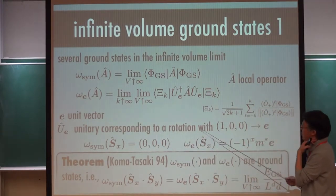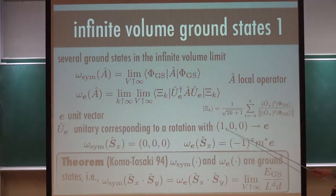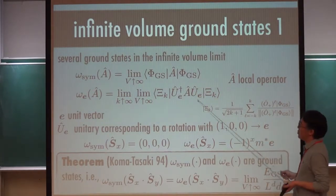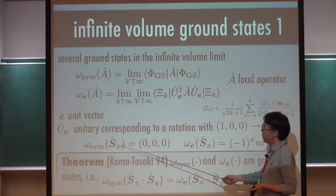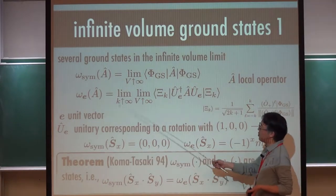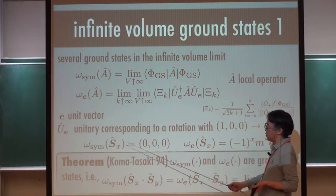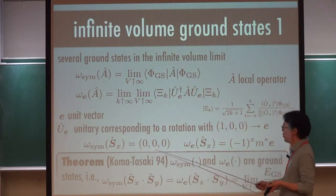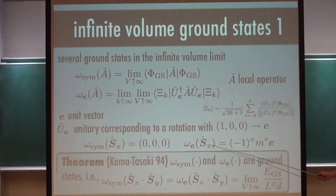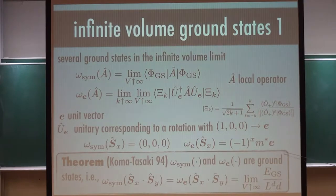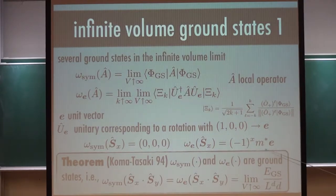So omega-sim of A is the expectation value of A in a ground state called omega-sim. Now E is a unit vector pointing in any direction, and omega-E is an infinite volume ground state which I denote by omega-E. And U_E is a global spin rotation which brings the E0=(0,0,1) direction to E.